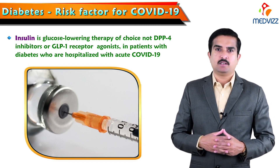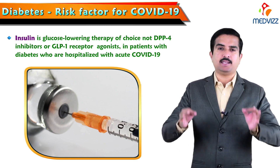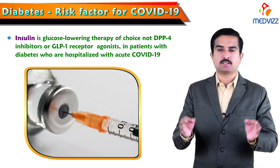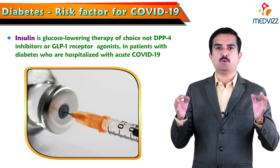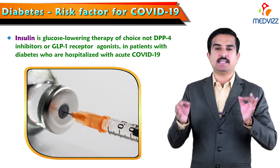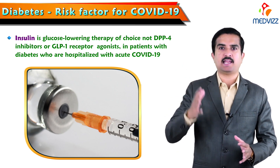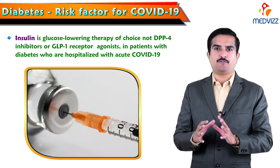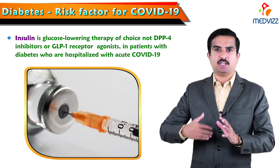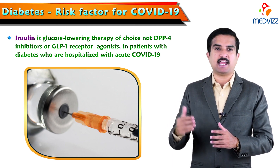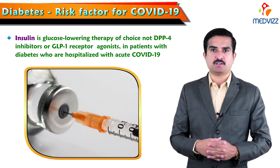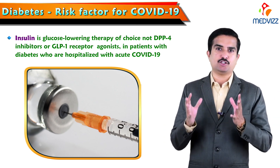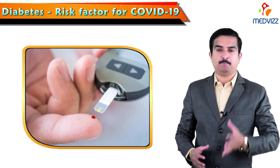The important conclusion is that insulin treatment has been recommended in patients with diabetes with severe COVID-19, but not DPP-4 inhibitors or GLP-1 receptor agonists. For patients with diabetes who are hospitalized with moderate or severe COVID-19, it is recommended to use insulin rather than any other hypoglycemic agents.